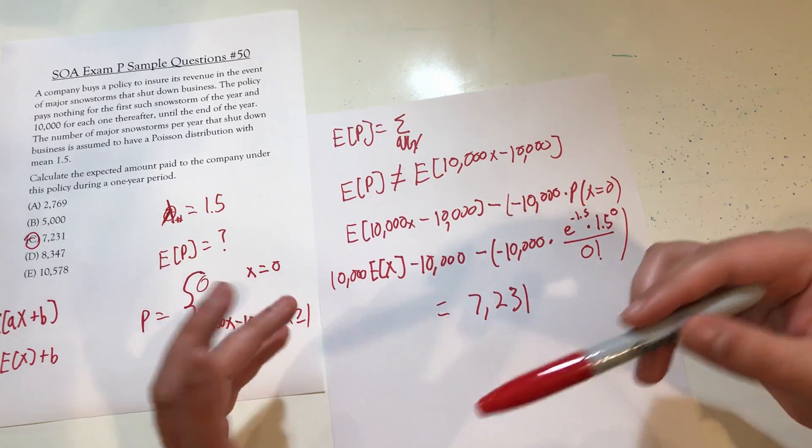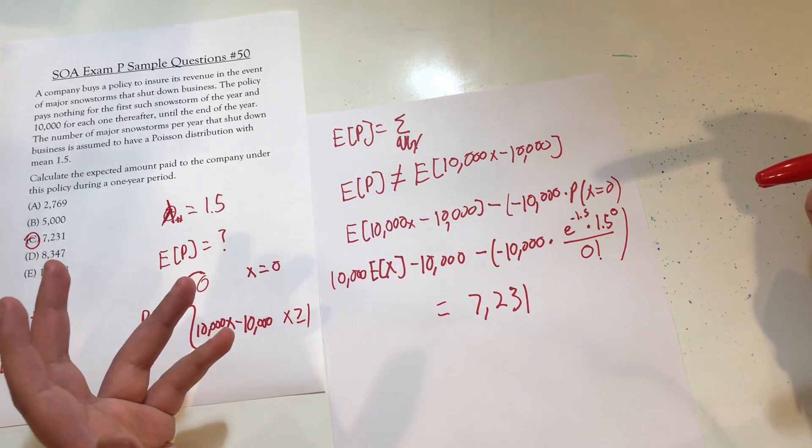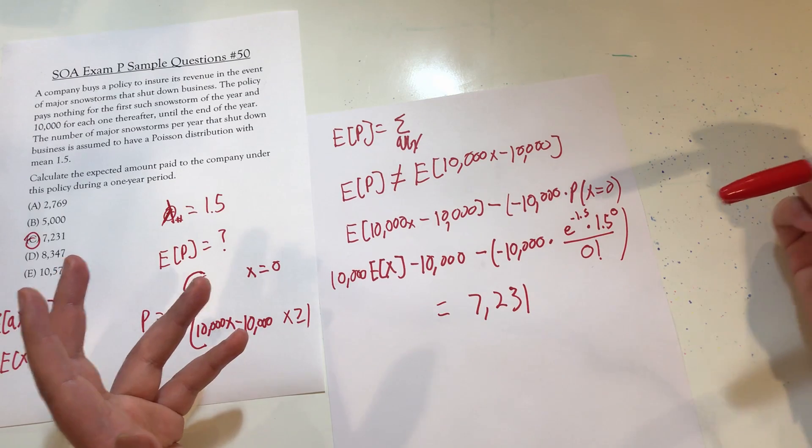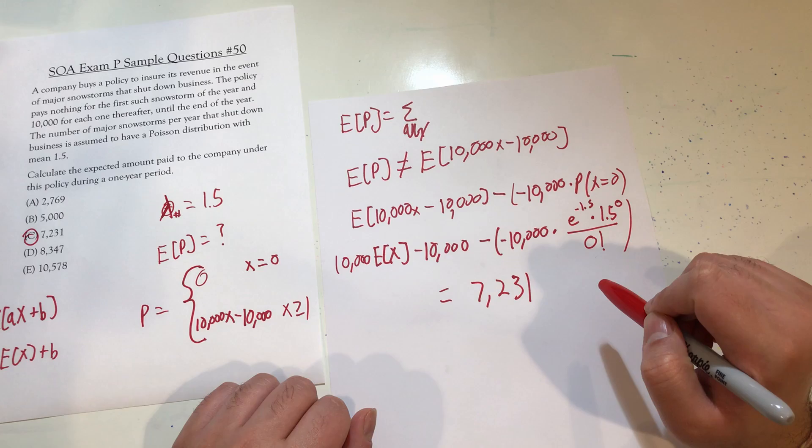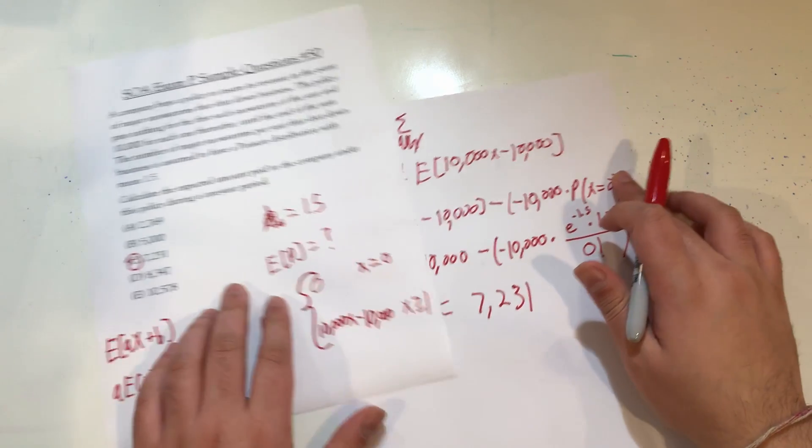After we set that up, it's just plug in a number, compute it. Just basic arithmetic of multiplying, subtracting, dividing. And we end up with this number.